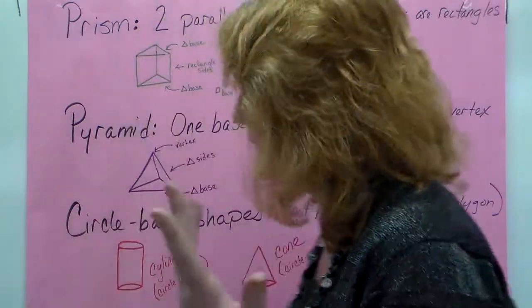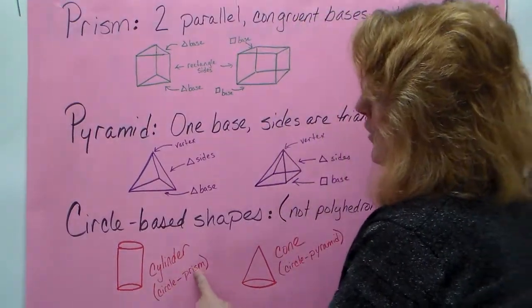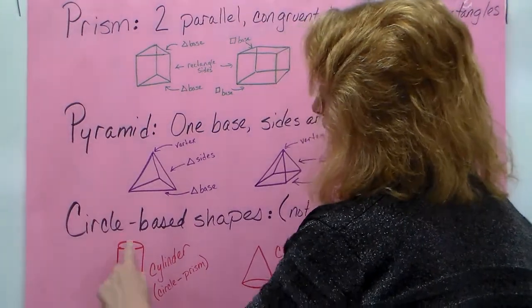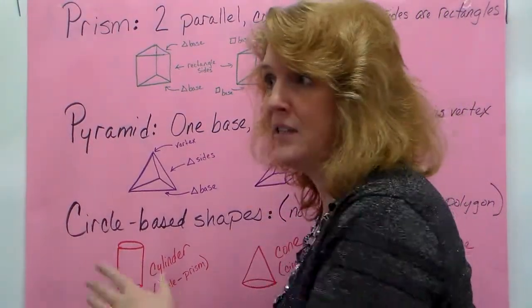But we still learn about them because they still exist in real life. Now in a circle-based prism, we call a cylinder. It's got a circle here, it's got a circle here, it's got one rectangle that connects it.